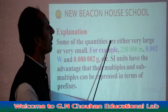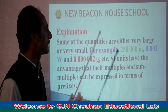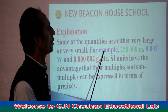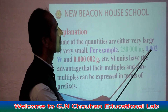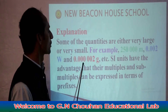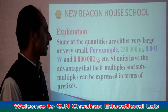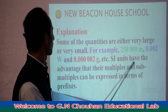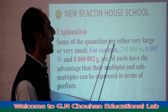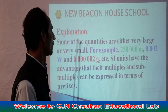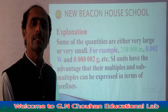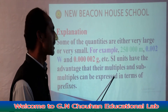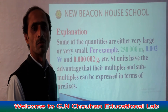Some quantities are either very large or very small. For example, two lakh fifty thousand meters, or zero point double zero two — their multiples and sub-multiples are expressed in terms of prefixes.